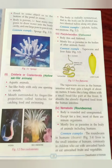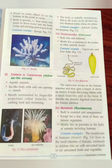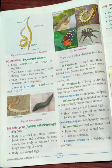Nematoda — roundworms. The body is rounded and unsegmented. Except for a few, most of them are minute organisms and mostly live as parasites in the bodies of animals, including humans. A common example is Ascaris, which lives in the small intestine of humans — commonly in children who eat with unwashed hands or eat unwashed fruits or vegetables.